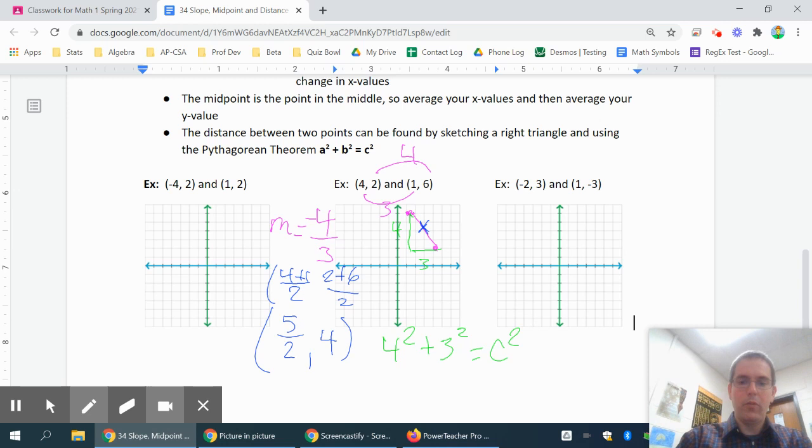So four squared is 16, three squared is nine. 16 plus nine is 25, so 25 equals c squared. Now remember, since you have a square, you might have done this before - to get rid of the square, you have to take the square root of both sides. So the square root of 25 would be five. So my final answer for my distance would be five. So I have a slope of negative four thirds, a midpoint of five halves, four, and a distance of five.